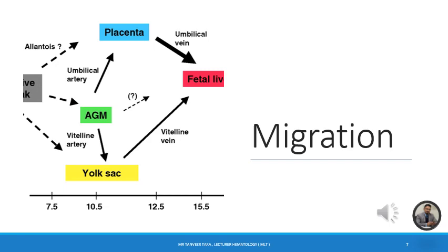During the first trimester, the yolk sac is responsible for hematopoiesis. With the passage of time, the liver develops and hematopoietic stem cells migrate toward the liver. By the third month of gestation, hematopoiesis is completely established in the liver, and hematopoietic stem cells migrate to other parts like the liver and spleen before eventually moving to the bone marrow.